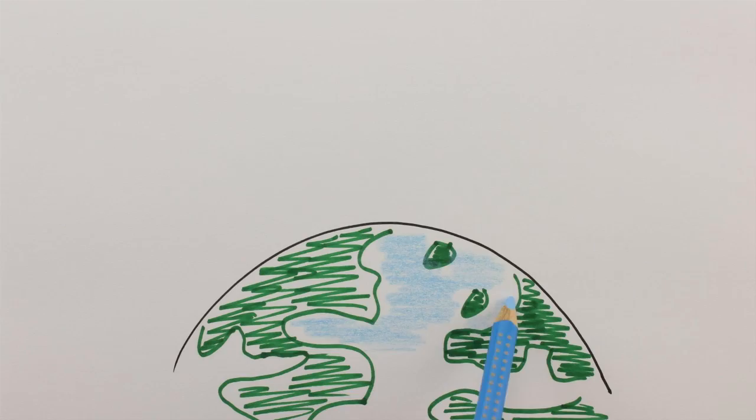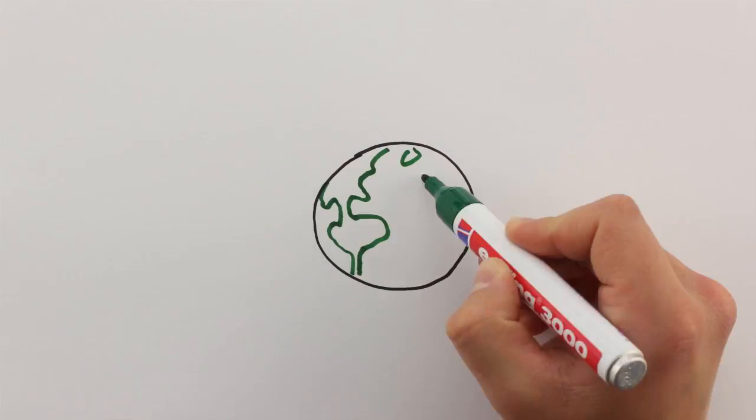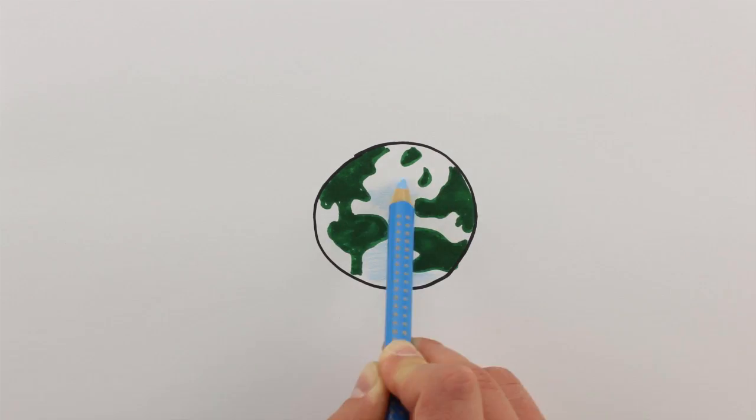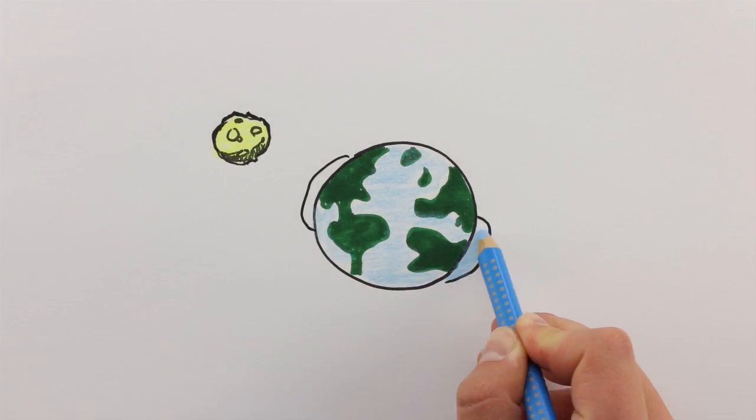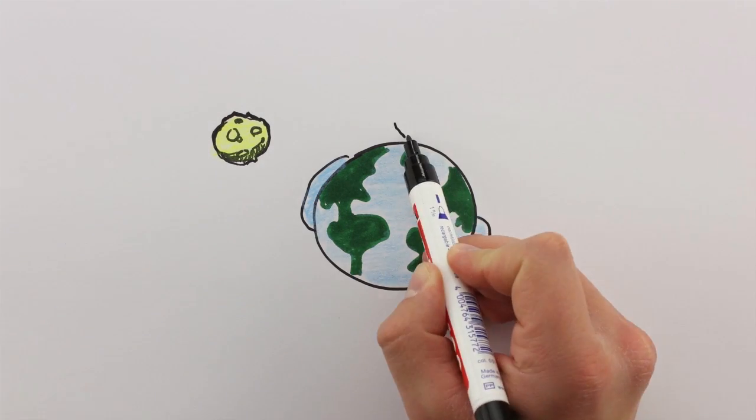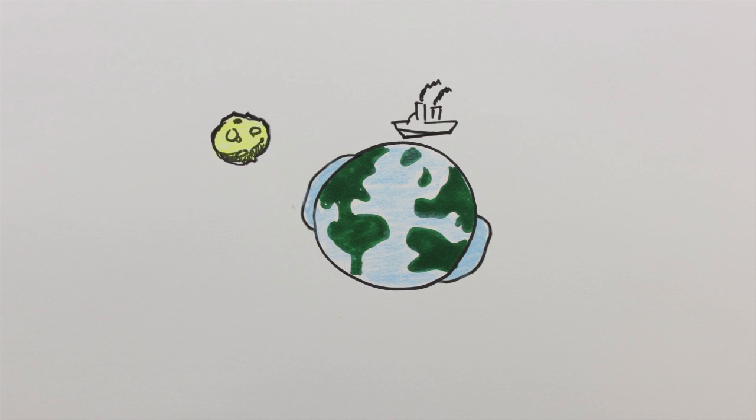While we can clearly see and feel the attraction from something really massive and nearby, like the Earth, the effect of things that are further away is harder to notice. For example, the influence we feel from the Moon is pretty weak, and the main effect we can observe is when parts of the ocean fall into the space-time curvature that the Moon causes. Most people like to call this effect tides.